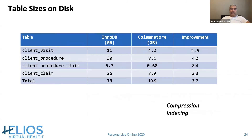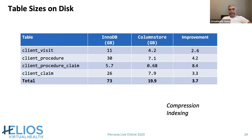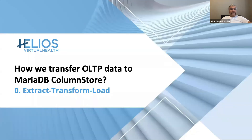Another ColumnStore benefit is reduced storage. In our case, we observed an overall factor of four. Half of that is due to compression — we have a lot of binary data, encrypted protected health information, that is not expected to compress well. The other half comes from indices removal. With such an impressive performance gain, we clearly need to transfer data to the ColumnStore, but how?